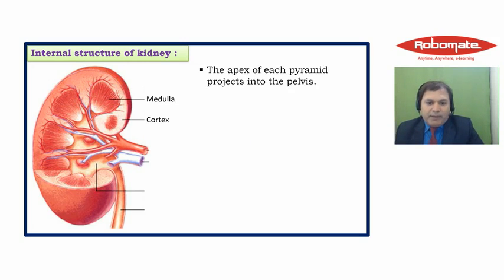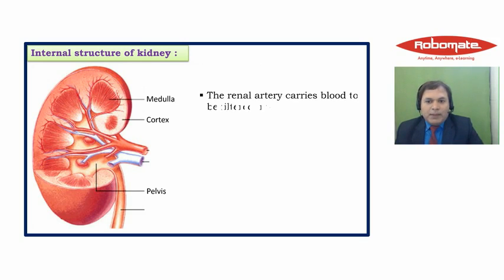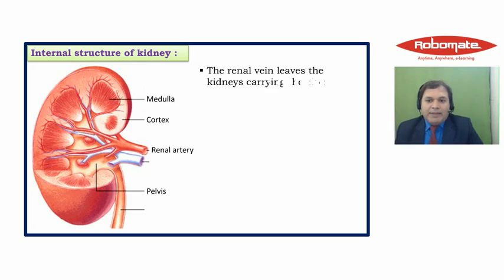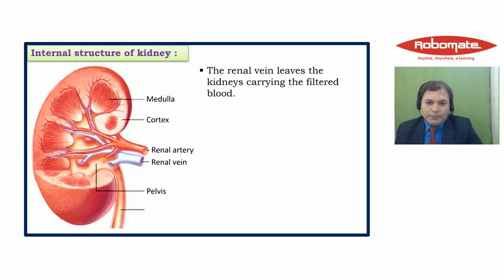The apex — that is, the tip — of each pyramid projects into the pelvis region of the kidney. The renal artery carries blood to be filtered into the kidneys, and the renal vein carries the filtered blood back out of the kidneys. Finally, the ureter carries the urine away from the kidney.